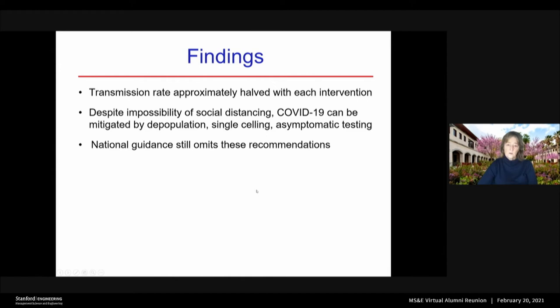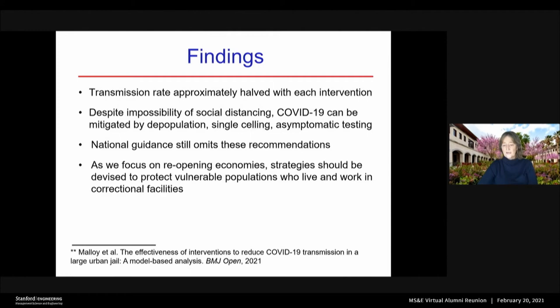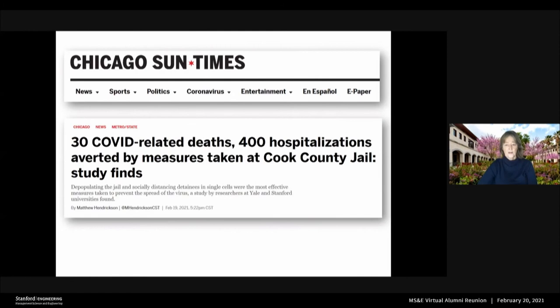Right now, national guidance still omits these recommendations. Our recommendation from this study is that as we focus on reopening economies, we should really devise strategies to protect vulnerable populations who live and work in correctional facilities. This work came out just this week in BMJ Open. The Chicago Sun Times ran the following article yesterday: '30 COVID-related deaths and 400 hospitalizations are likely averted by measures taken at Cook County Jail, a study finds.'